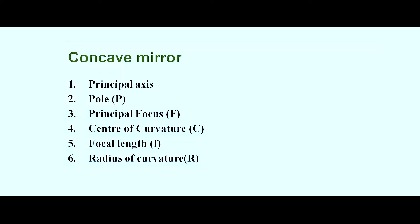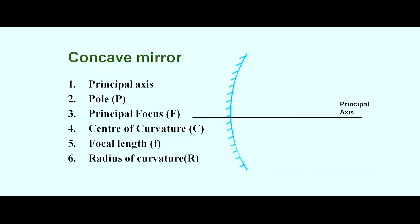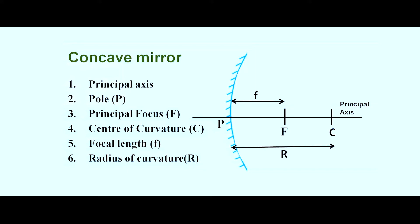Now let's look at these features in a concave mirror. This is the principal axis. The point where the principal axis meets or cuts the mirror is called the pole, represented by letter P. The point F is called the focus of the mirror. The distance between the focus and the pole is called the focal length. We also have the center of curvature C, and the distance between C and the mirror is called the radius of curvature, denoted by R.